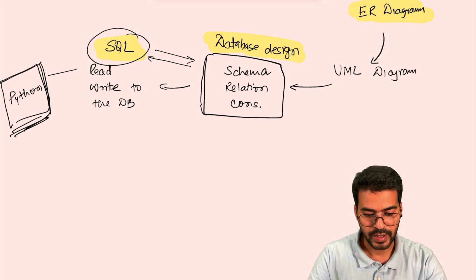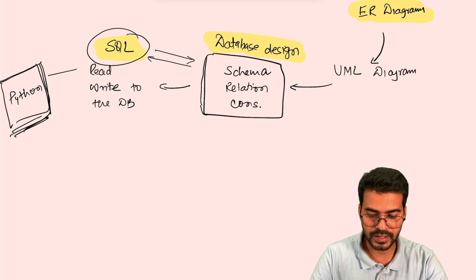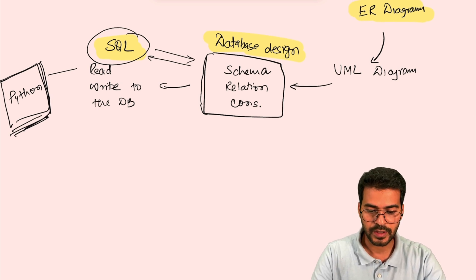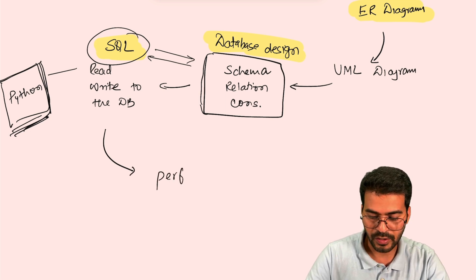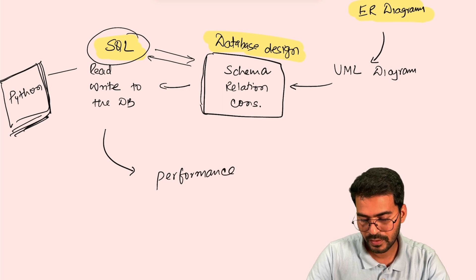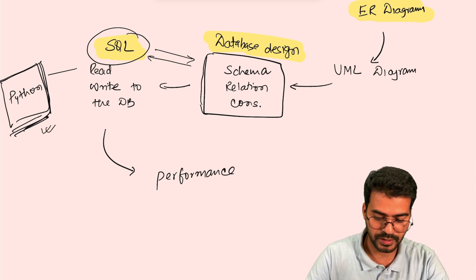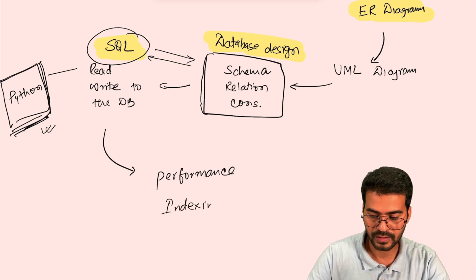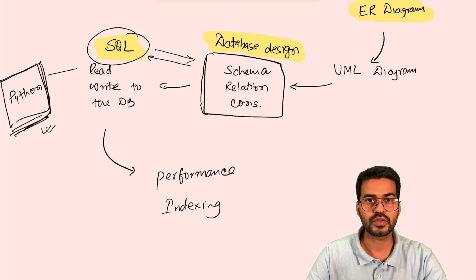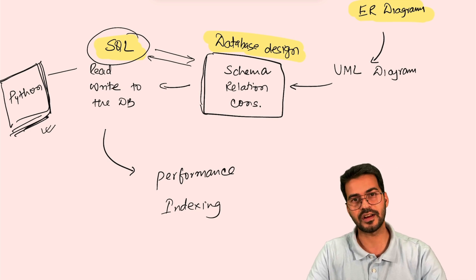At a certain point you will realize - and this always happens - that something you built was not very efficient. This is where performance comes into picture. Performance is achieved with code optimization, but in our context there is something called indexing. You index the data in a particular format - we will also learn B-tree and B+ tree indexing techniques. This is where indexing comes into the picture in our story.